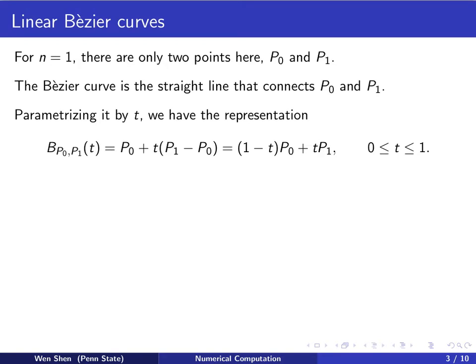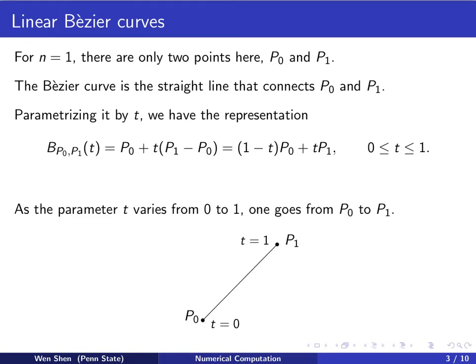If t is between 0 and 1, then the coefficients 1 minus t and t are both non-negative and they add up to 1. So this expression is also called a convex combination of P0 and P1. As the parameter t varies from 0 to 1, the point goes from P0 to P1. When t is 0, we get P0. When t is 1, we get P1.